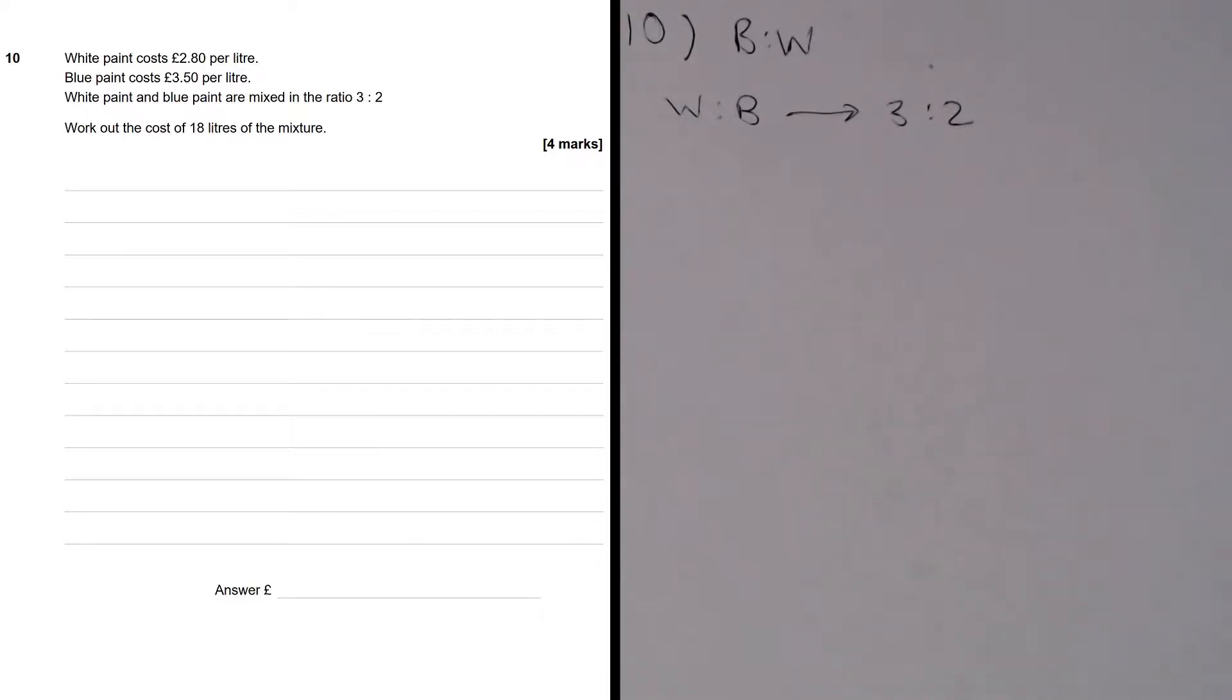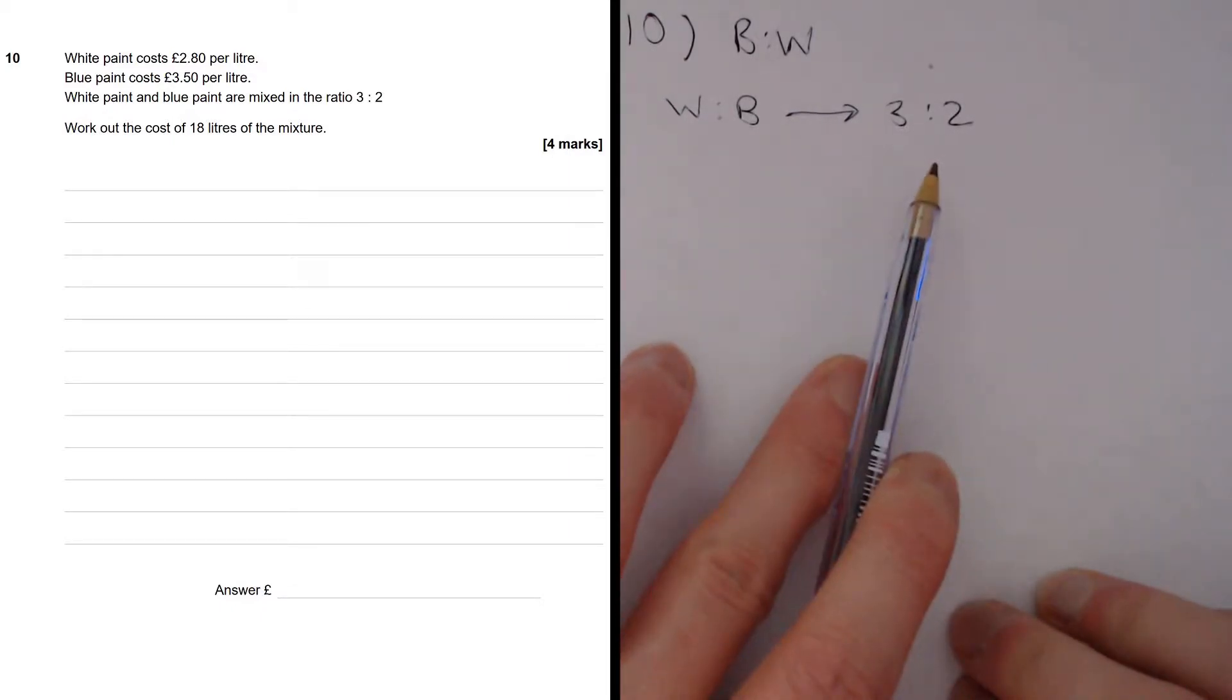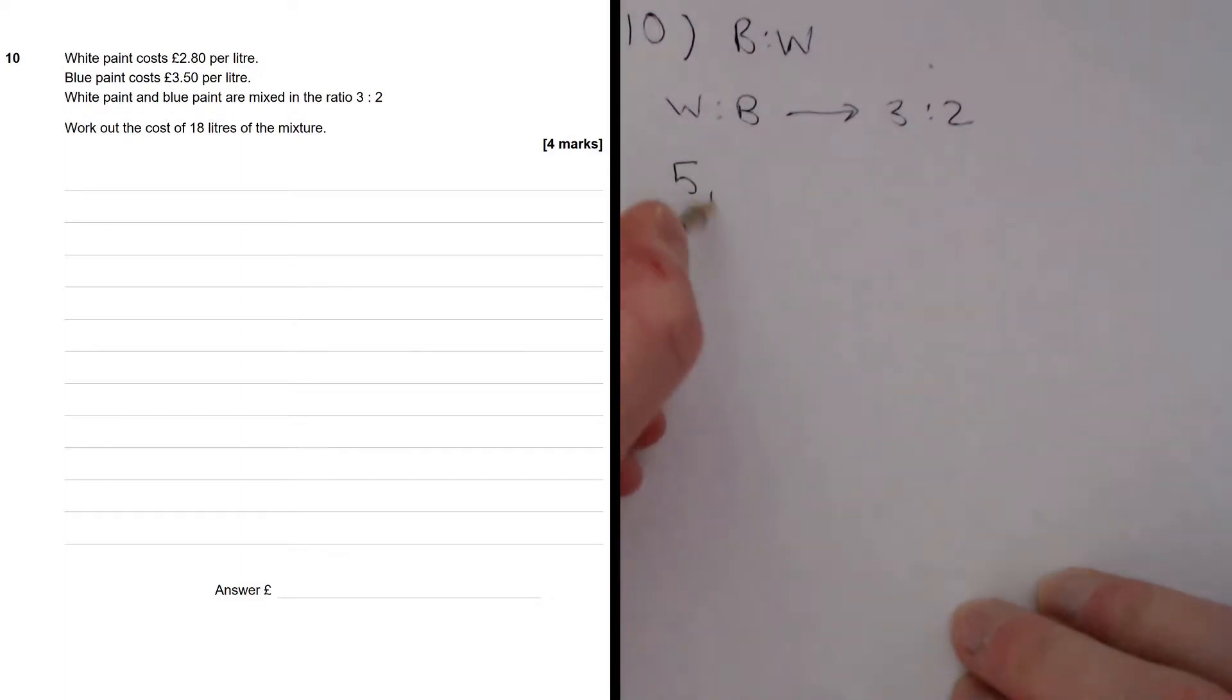So the first thing I would do is deal with the ratio. In the ratio we have 3 parts white paint, 2 parts blue paint. So in total there are 5 parts to the ratio. 3 parts plus 2 parts is 5 parts. And that's equal to 18 litres of the mixture because we want 18 litres in total.